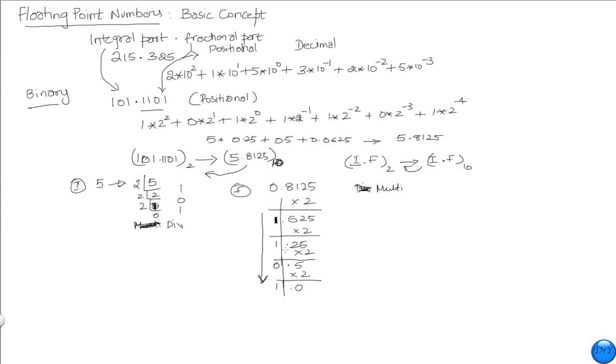And then I write the number down like this, from top to bottom. So in other words, this number 0.8125 represents 1101. And so I can say that this number is 101 with 1101, which is exactly what we have here.